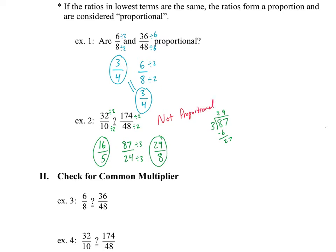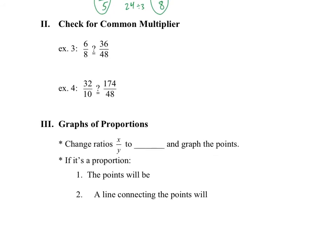Reducing can be useful, but with large numbers there's a better way — Method 2: checking for a common multiplier. For example, if I have 3/5 and the numerator becomes 9, I can see that 3 times 3 equals 9, so multiplying 5 by 3 gives 15. That gives equal ratios and forms a proportion.